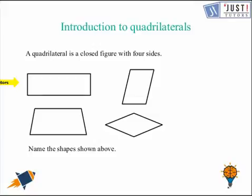The first one is a rectangle. The next one is a parallelogram. This is called a trapezium. This is sometimes called a kite or a diamond.